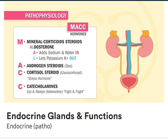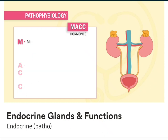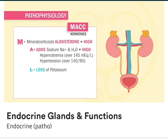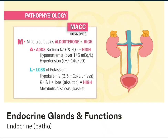Now that we've reviewed the basics of normal physiology, what's going on in hyperaldosteronism? We have high aldosterone, so the ability to add sodium and water into the body is super high, which leads to hypernatremia and hypertension. And the loss of potassium is greater, so hypokalemia sets in. And we get a higher pH level as the body loses more hydrogen ions in the urine — this is called metabolic alkalosis.